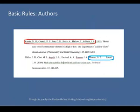Author's names are inverted — last name first. As in the example circled in red, give the last name and initials for all authors of a particular work for up to and including seven authors. If the work has more than seven authors, as in the example circled in blue, list the first six authors and then use ellipses after the sixth author's name. After the ellipses, list the last author's name of the work.